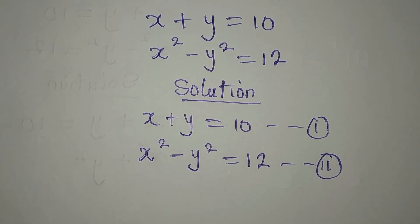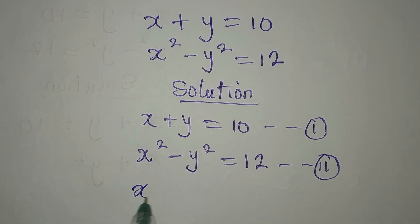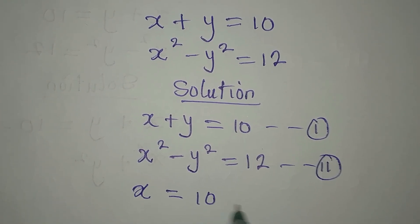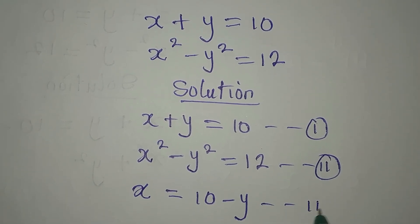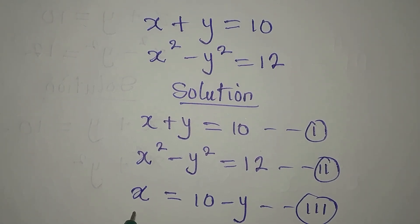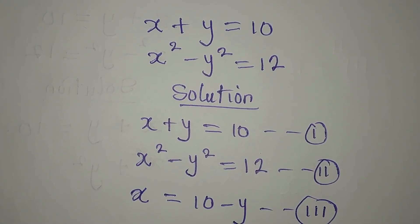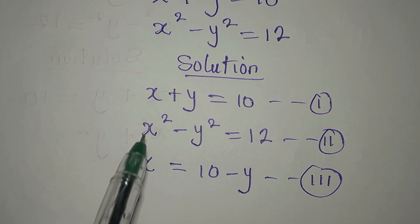Now I will develop equation 3 from equation 1: x is equal to 10 minus y. This is equation 3. We are going to need this equation 3 when we get the value of y, but first we are going to substitute equation 3 into equation 2.